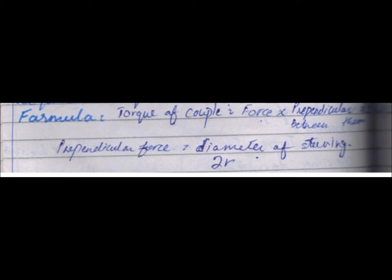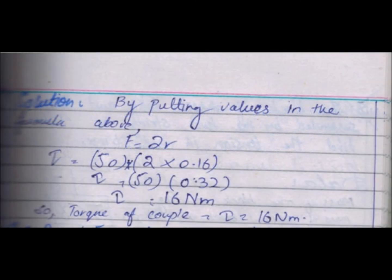The perpendicular distance between the couple is 2r, where r is the radius. So the torque of the couple is equal to F into 2r. Now let's look at the solution by putting values into the formula τ = F × 2r.